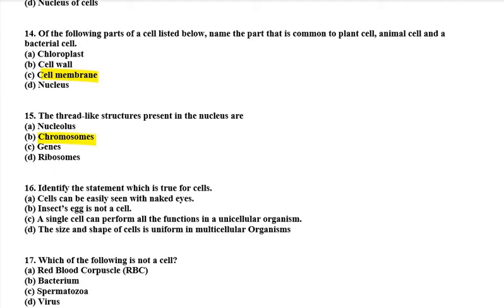Sixteenth question: identify the statement which is true for cells. The options are: cells can be easily seen with the naked eye; insects; egg is not a cell; a single cell can perform all the functions in a unicellular organism; or the size and shape of cells is uniform in a multicellular organism. The right option is C — a single cell can perform all the functions in a unicellular organism, because 'uni' means one.